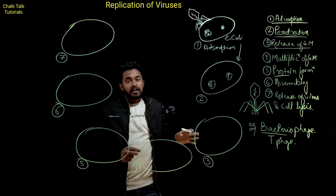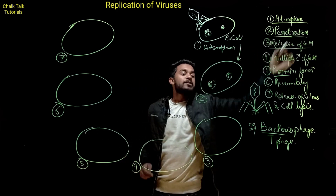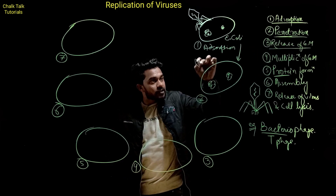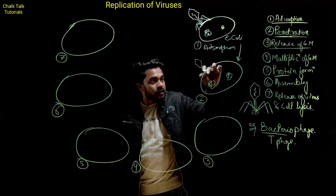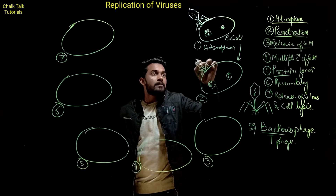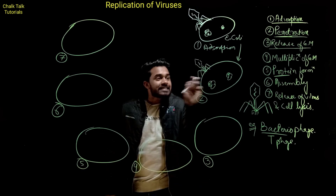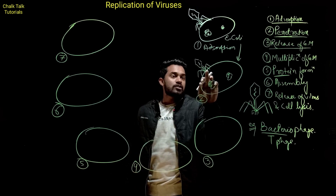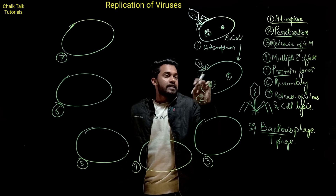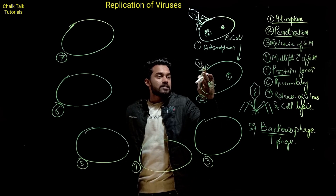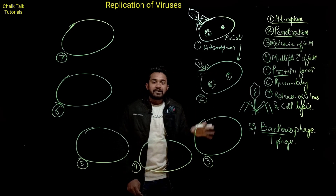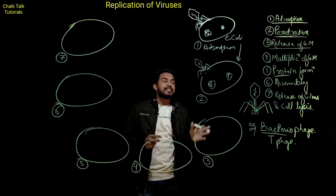The second step is penetration. Penetration का मतलब यह है कि जो bacteriophage है, इसके पास कुछ spikes present होते हैं। उन spikes की मदद से यह E. coli की जो cell wall है, उसको penetrate करेगा, degrade करेगा या तोड़ेगा। इसकी cell wall में hole कर देगा, penetrate कर देगा।